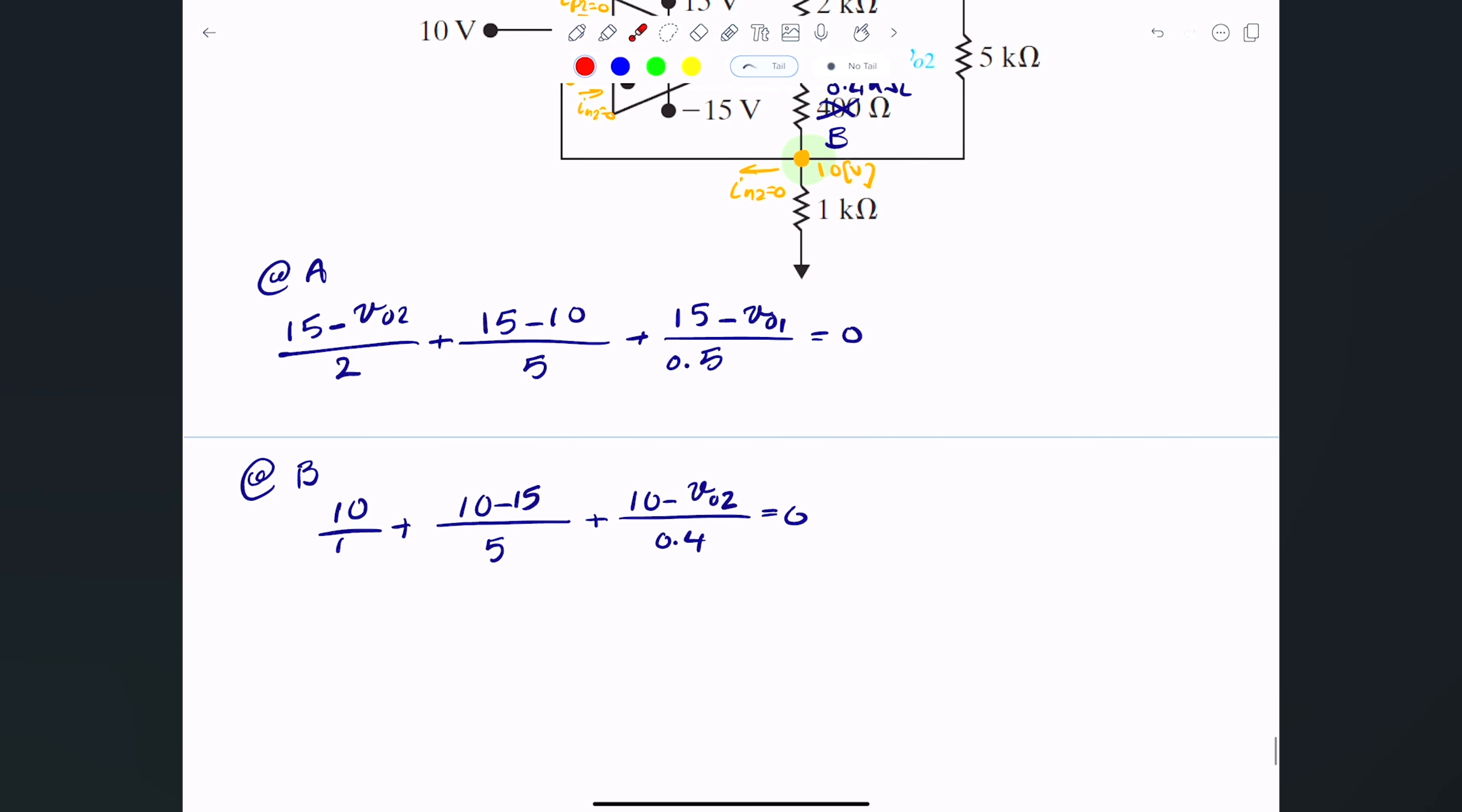Now looking at these, these are two equations, two unknowns. Frankly speaking, I have one unknown here, which is V output 2, so all I have to do is just figure out what V output 2 is. That will be 13.6 volts.